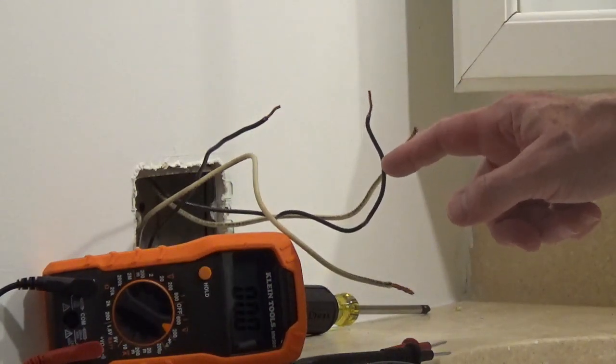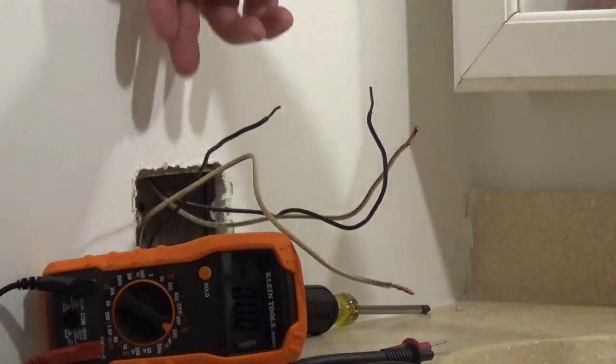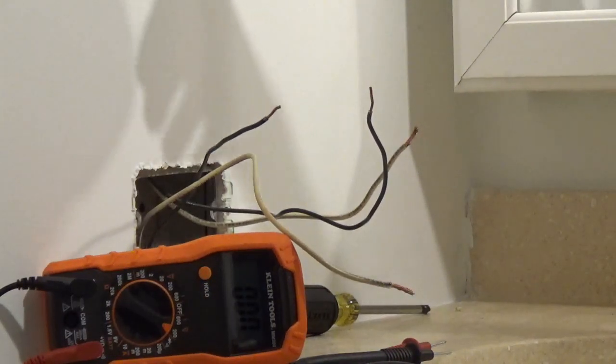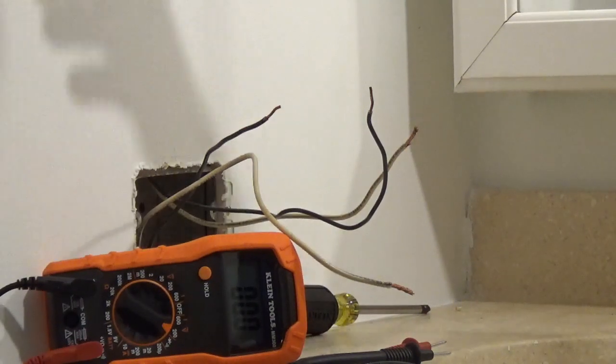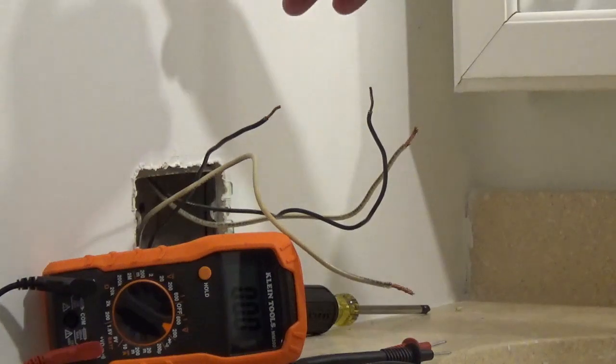In this case, it's either going to be this black wire or this black wire. We're doing this project in the Chicago area, so we have metal boxes connected to metal conduit going all the way back to the service panel. So our conduit and the metal box is grounded.